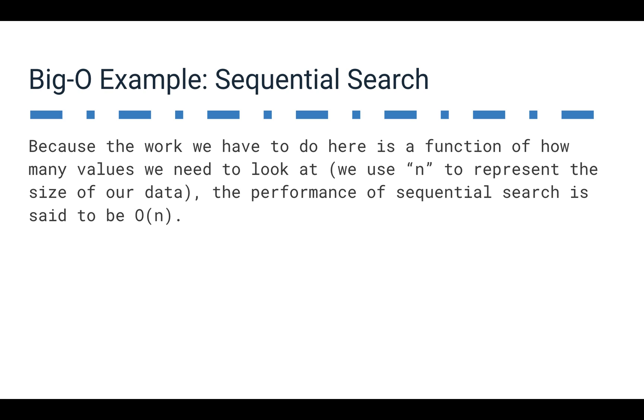So, what we find is anytime we have to do a sequential search, we could get lucky and we could find the value we're looking for at the beginning, but chances are it's going to be somewhere in the middle on average. And if we can't find the thing at all, we're going to have to look at every single value. So, that's why we call this one a Big O of n algorithm. It really depends on how many things we're looking at, it depends directly on n.